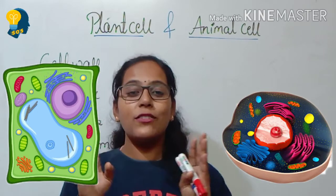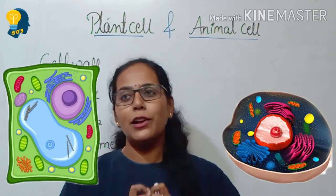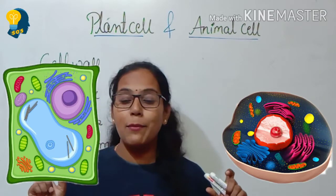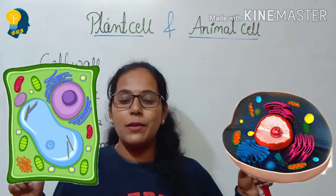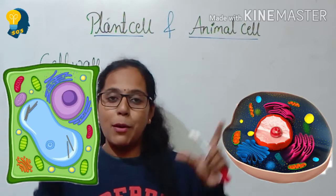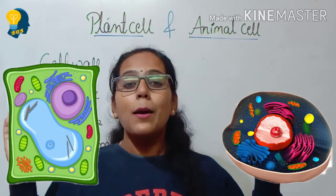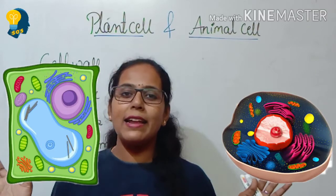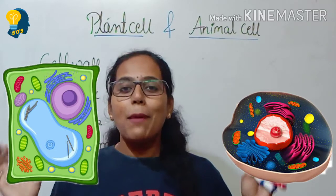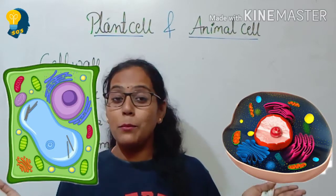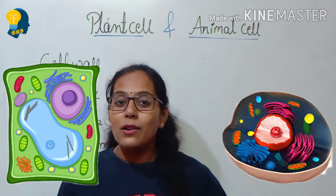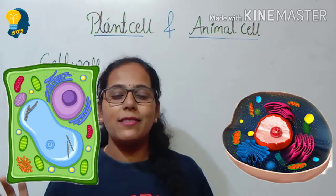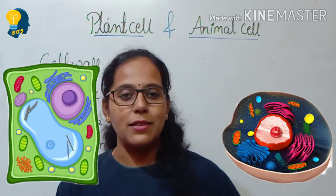I also want to mention that the cell membrane — which we also call the plasma membrane — is present in both the plant cell and the animal cell. So don't list any difference about the plasma membrane, because it is present in both cases. When I talk about the cell wall, it is present in the plant cell but not present in the animal cell.